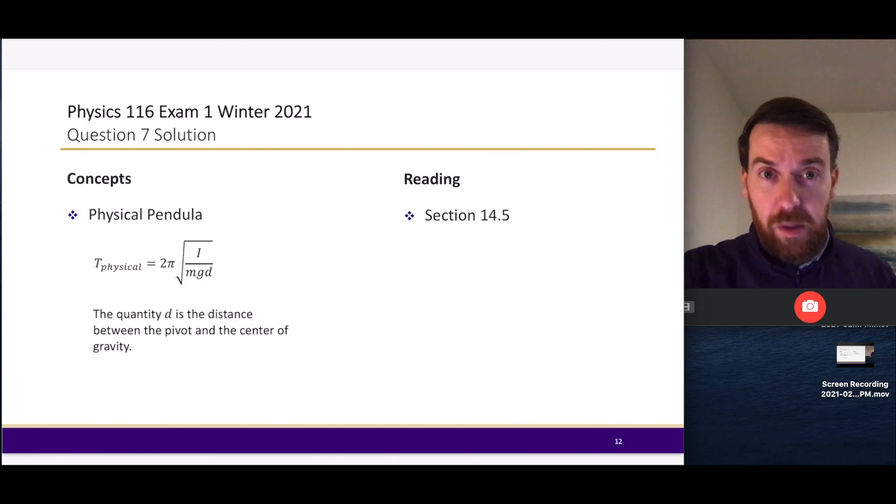So this quantity d—we're focusing in here in this particular question on the concepts of thinking about the moment of inertia and how that changes depending on the pivot point. There's one center of gravity for the object that doesn't depend on where the pivot is, but how far the pivot is from the center of gravity will change depending on where you place that pivot. That's the big idea to this particular question.